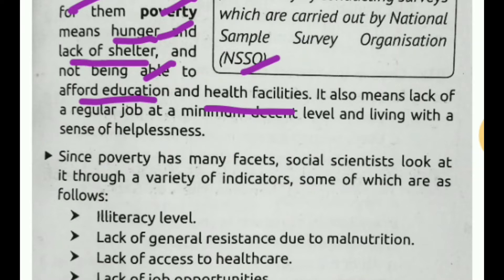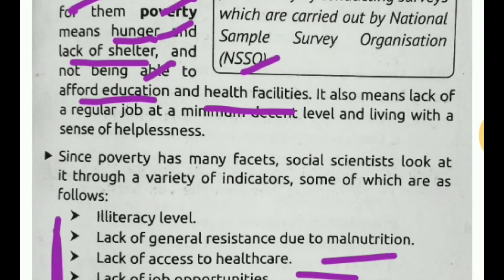Since poverty has many facets, social scientists look at it through various indicators. Some of these indicators are: illiteracy level, lack of general resistance due to malnutrition, lack of access to healthcare facilities, lack of job opportunities, lack of safe drinking water and sanitation facilities, social exclusion, and vulnerability.